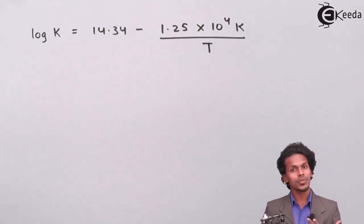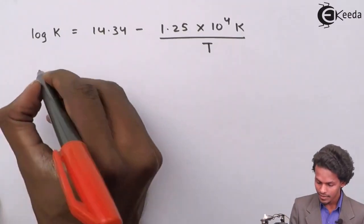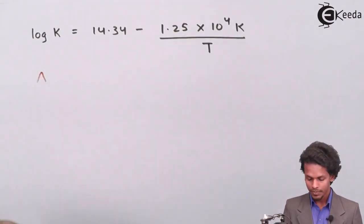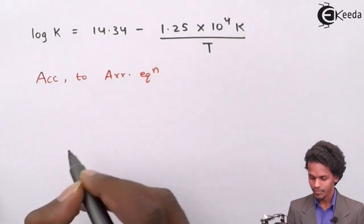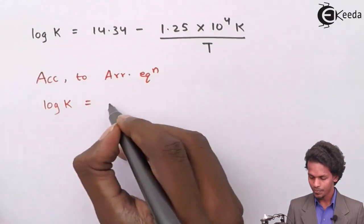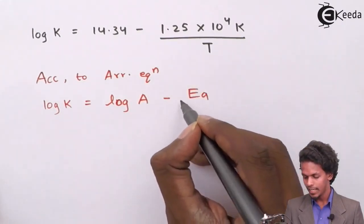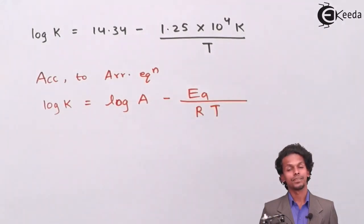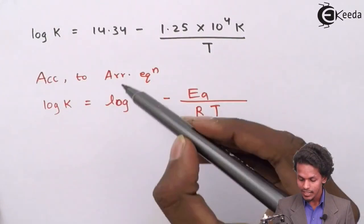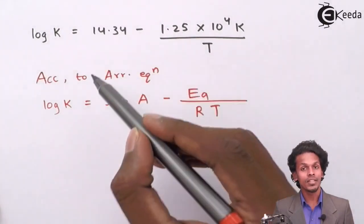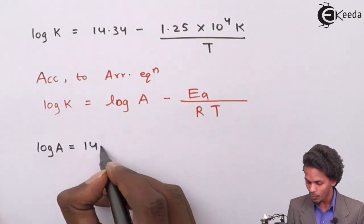This equation is very much equivalent to the Arrhenius equation we derived earlier. According to the Arrhenius equation, log K = log A minus Ea divided by (2.303RT). Comparing, we can see that log A = 14.34.